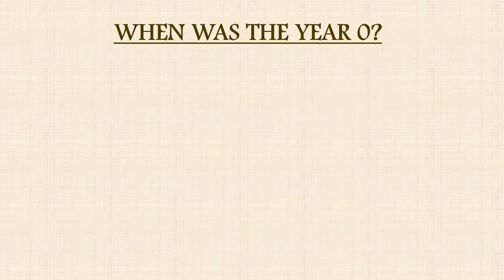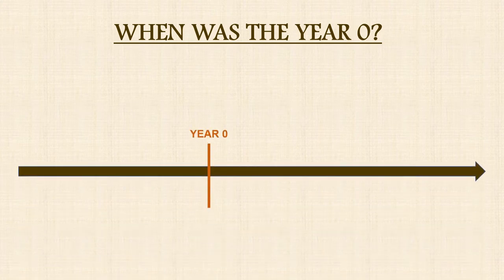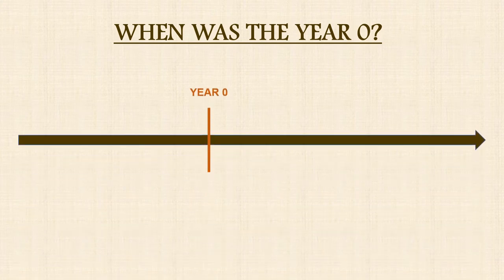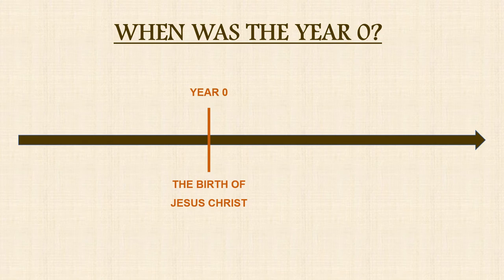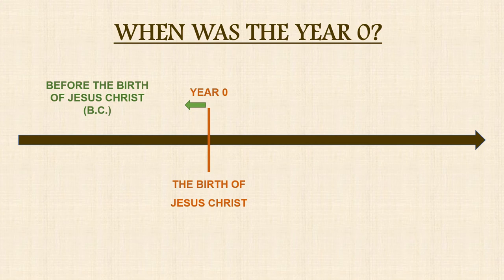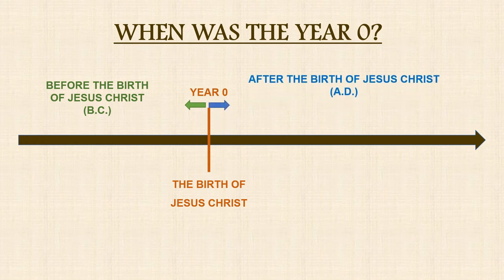But when was year zero? If you look at this timeline, you can check that year zero coincides with the birth of Jesus Christ. So year zero is when Jesus Christ was born. If we speak about an event previous to this moment, we say 'before the birth of Jesus Christ', abbreviated as BC.